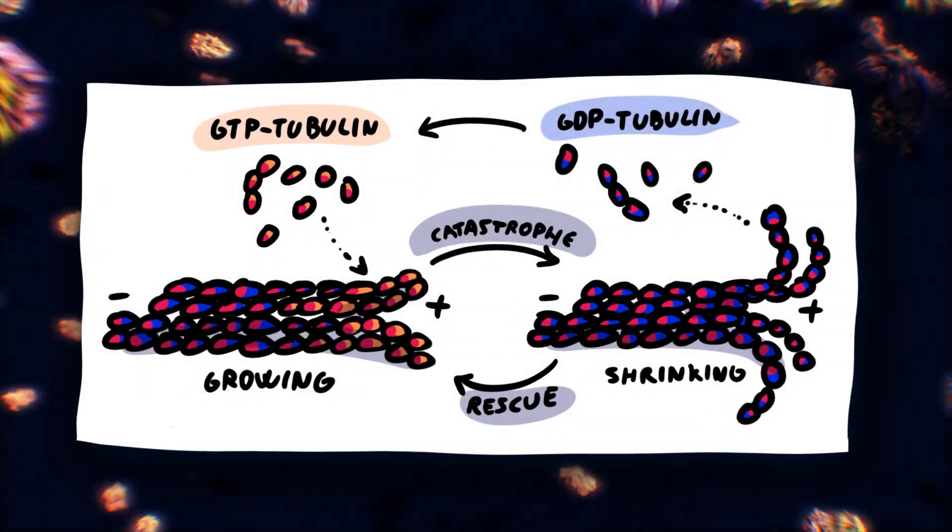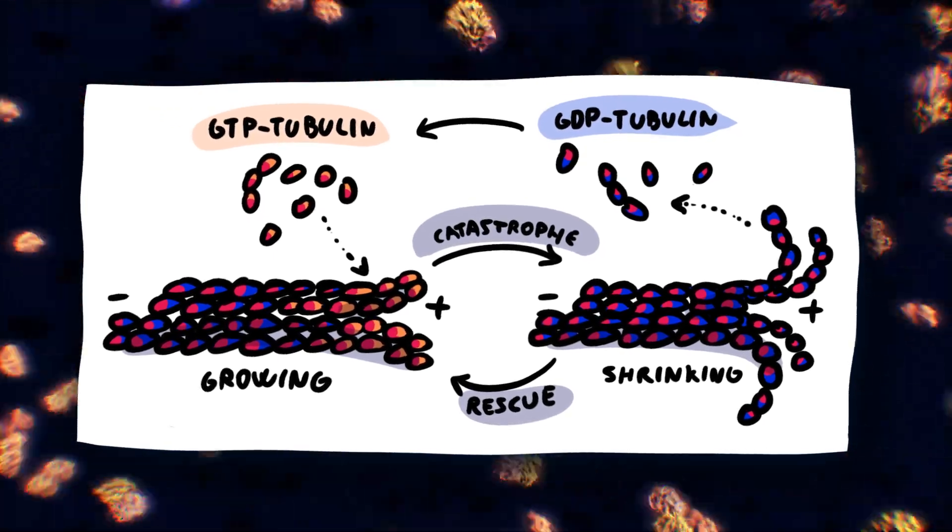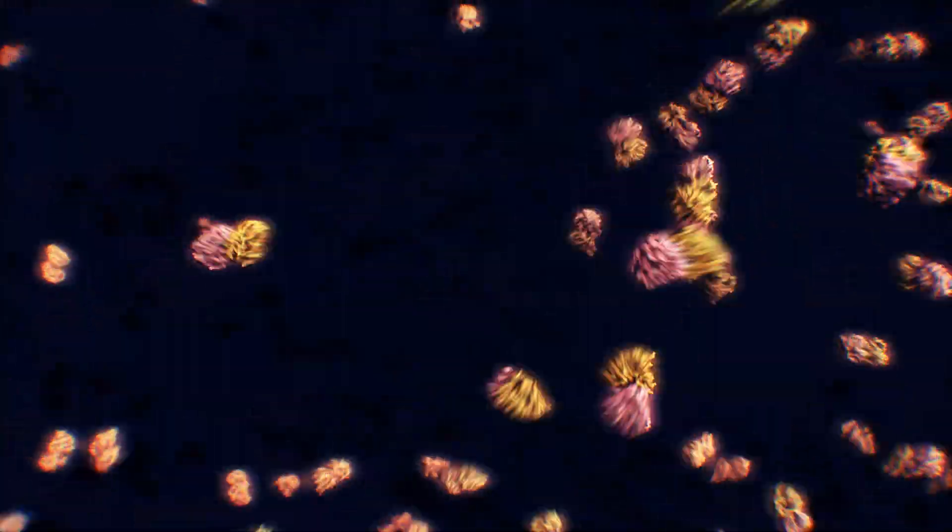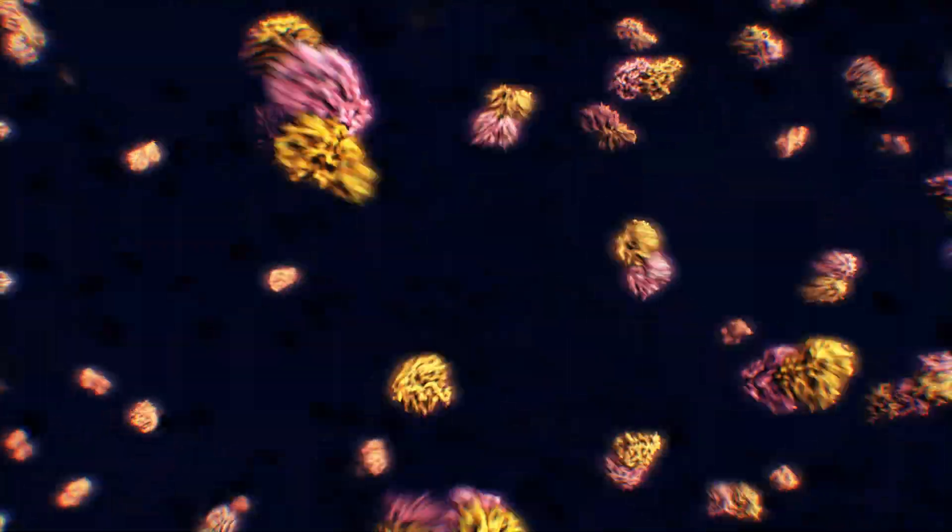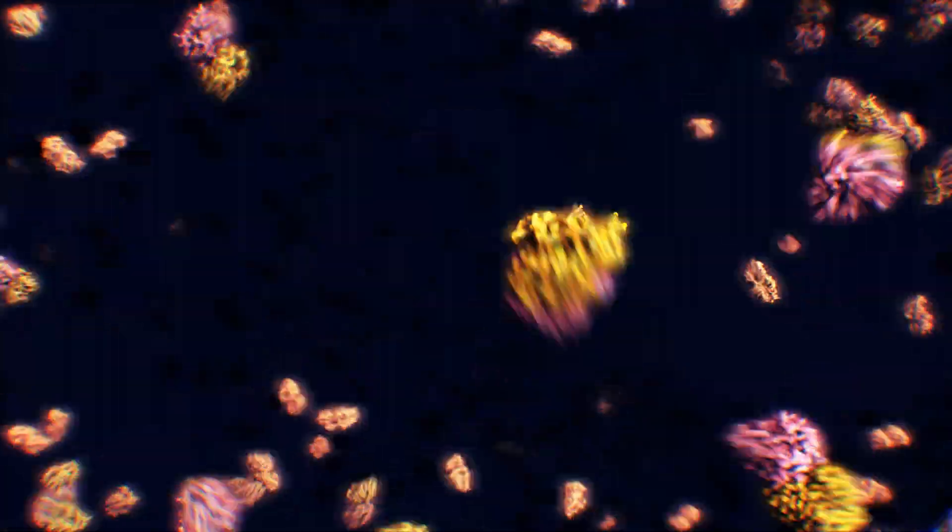Animations explaining things like dynamic instability often do this through simplified diagrams that illustrate the process. But what if we wanted to sketch an idea of how molecular processes look like, if we could see them? What if we tried to show the nanoworld as realistically as possible?